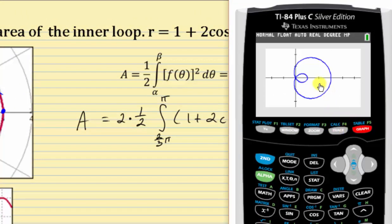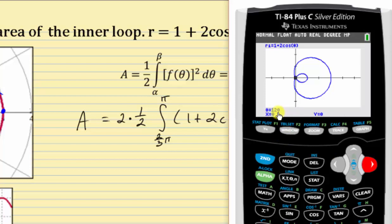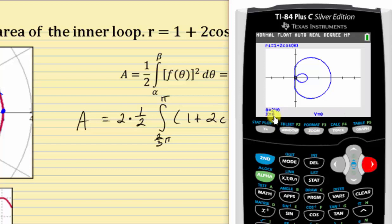And now if we press trace, we can verify the limits of integration. Notice right now theta is zero degrees, so we're at this point here. If we press the right arrow, theta will increase by 2.5 degrees. Notice back at the pole, the angle theta is 120 degrees, or two thirds pi radians. So if we continue from 120 degrees to 180 degrees, we trace out half of the inner loop. This is why we integrated from two thirds pi radians to pi radians and then doubled the area. To trace out the entire loop, notice how it takes the interval from 120 degrees to 240 degrees, which is two thirds pi radians to four thirds pi radians.